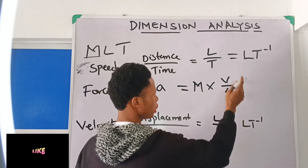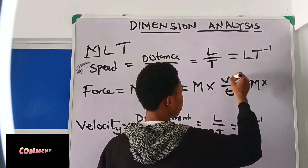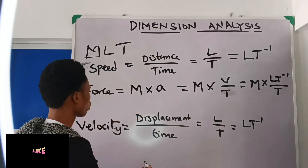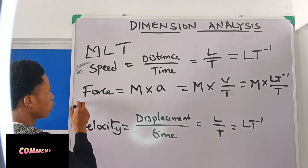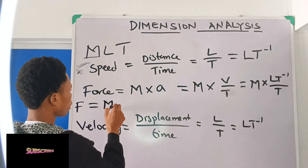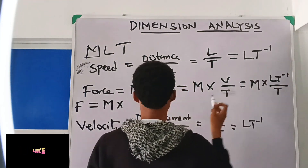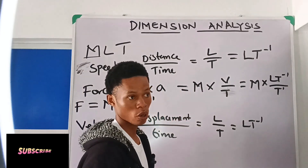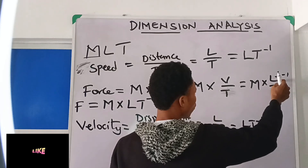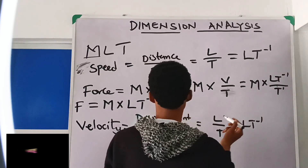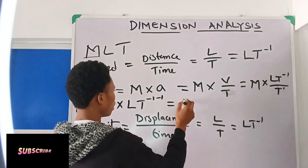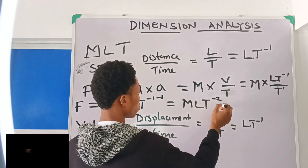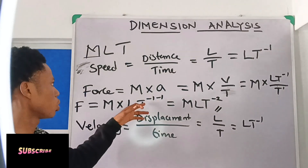Since velocity is LT⁻¹, I can replace velocity in the acceleration expression. So force equals M times LT⁻¹ all over T. Using the laws of indices — when the bases are the same and you divide, you subtract the powers — T⁻¹ divided by T¹ gives T⁻¹⁻¹ = T⁻². So the dimension of force is MLT⁻².